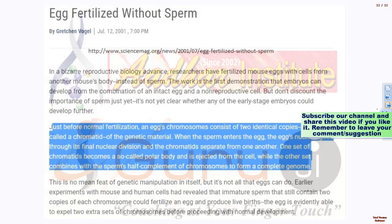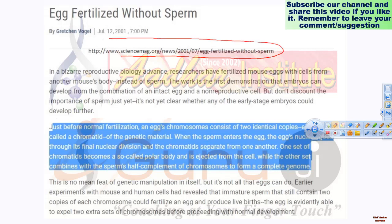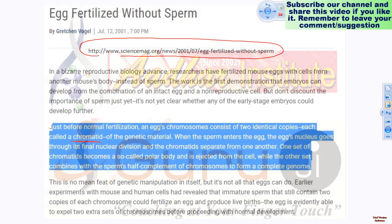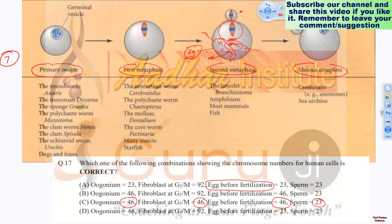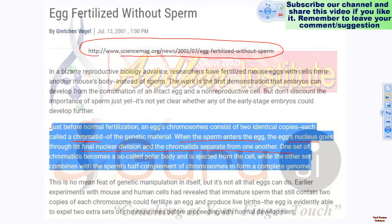To support this logic, I went through different research papers. A news item published in Science magazine, whose address I have provided, clearly mentions that just before normal fertilization, egg chromosomes consist of two identical copies — called chromatids — and chromatids and chromosomes are the same. When the sperm enters, the egg nucleus goes through the final nuclear division and the chromatids separate from one another. Please go through the literature and share your comments.